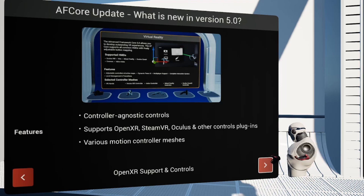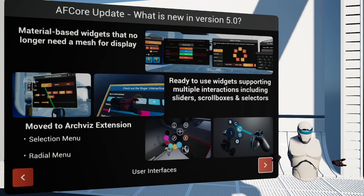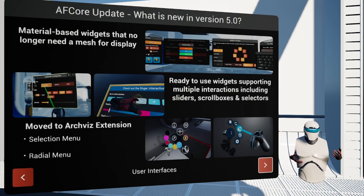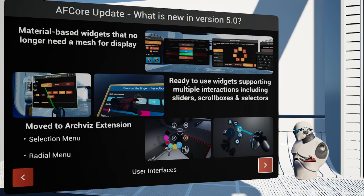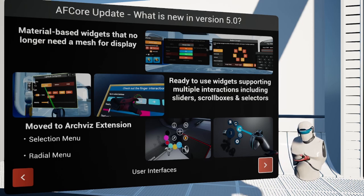Additionally, the Advanced Framework core comes with a complete UI rework. With material-based widgets, tons of ready-to-use widget elements, and many more interactions like trackable sliders, an input field with keyboard, and spawnable overlays, the Advanced Framework core's UI system is now better than ever. We also took this opportunity to move the radial menu and selection menu into the Aquis extension, where they fit much better. The Aquis extension is currently adapted to work with the Advanced Framework core 5.0, and the new version will be released soon.